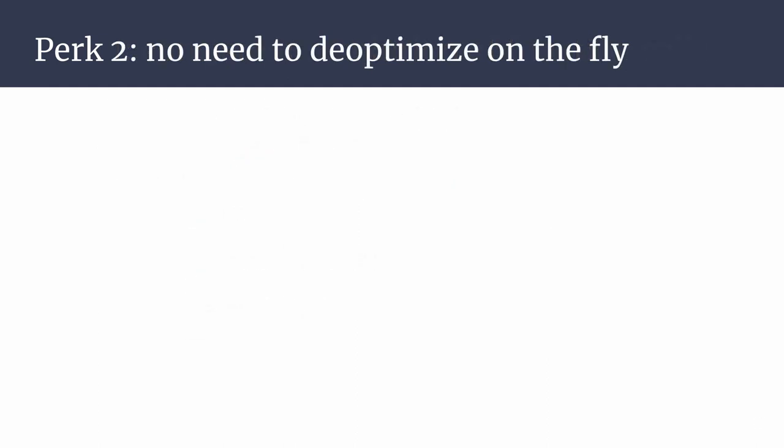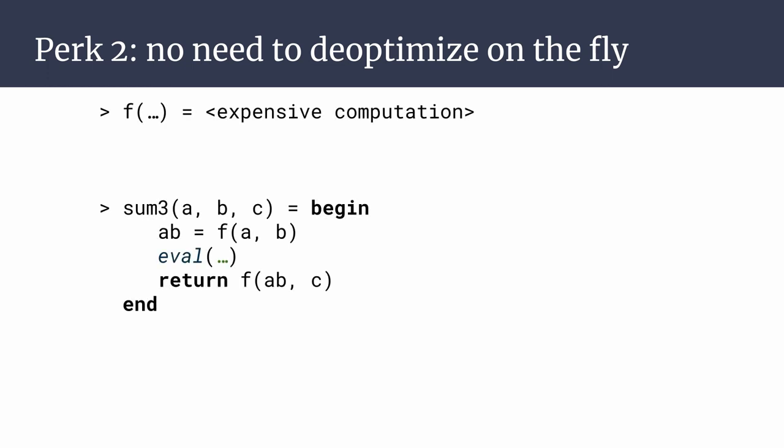Imagine that instead of plus, sum3 calls an expensive computation f, which can be optimized. Because of the world age semantics, we know that in this top-level call to sum3, f is guaranteed to resolve to its original definition.